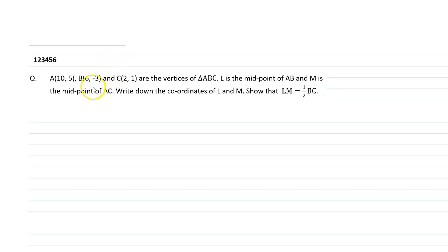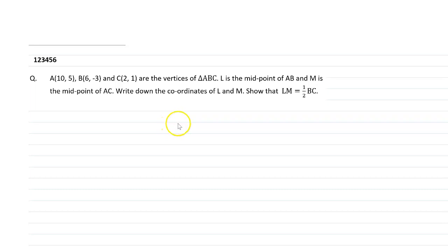The question is: the coordinates A(10,5), B(6,-3) and C(2,1) are the vertices of triangle ABC. L is the midpoint of AB and M is the midpoint of AC. Write down the coordinates of L and M, and show that LM is half of BC.